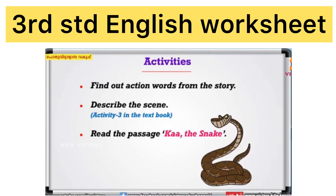Welcome to Third Standard English Worksheet. In the activities in the canon, find out action words from the story, describe the scene. Activity 3 in the text book, read the passage — Ka the Snake.